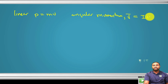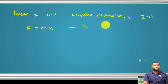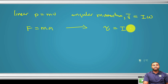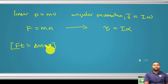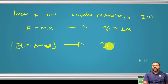Newton's second law F = ma, transposed to rotational motion, becomes τ = Iα. The impulse-momentum theorem F·t = Δ(mv) becomes, for rotation, τ·t = I·Δω. So the structure of rotational dynamics mirrors that of translational dynamics exactly.